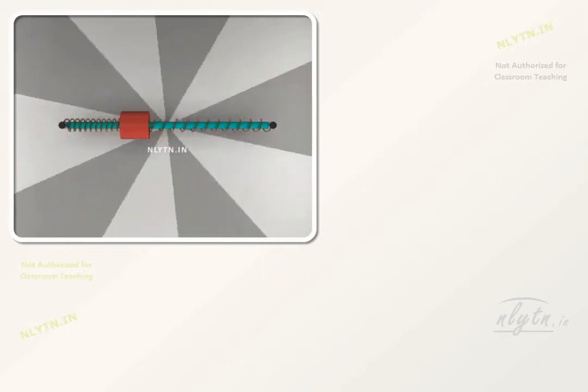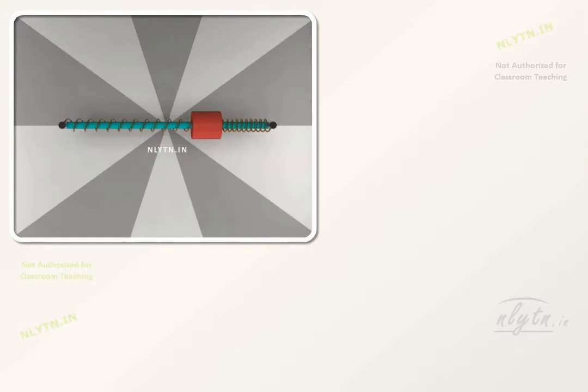In this frame, let us consider the forces acting on the block when it is displaced by a distance x. First of all, we have the pseudo force equal to m omega naught square x radially outwards. Also, as the springs are elongated and compressed by the amount x, therefore the force due to the springs will be equal to K1 x and K2 x in the same direction.